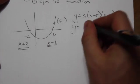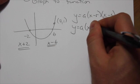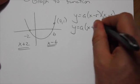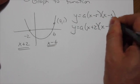So in our function here, it's going to look like this: y equals a times (x plus 2) times (x minus 6).